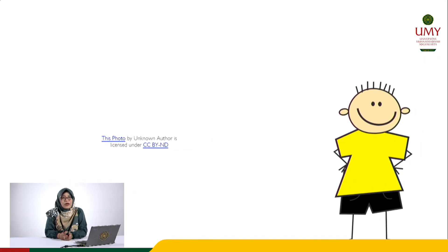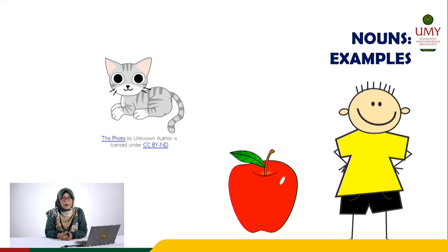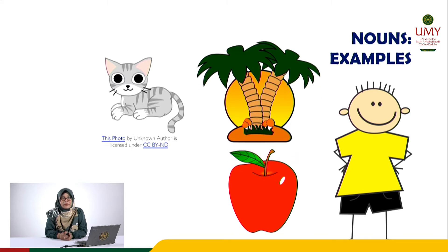Dear students, now you can see that these things represent nouns such as a boy, cat, apple, island, and also Aisha. From these examples, we know that there are various types of nouns. Now let's identify nouns in sentences.